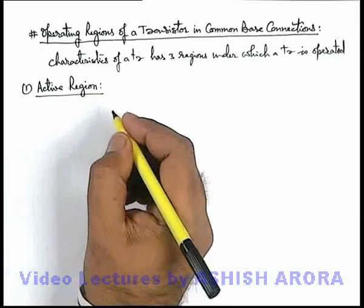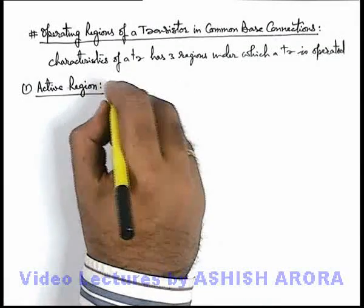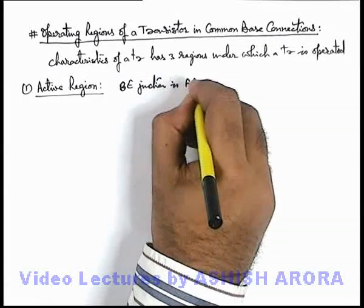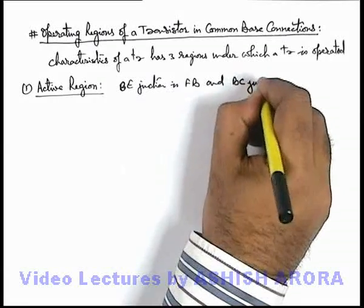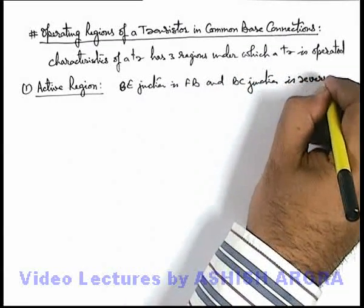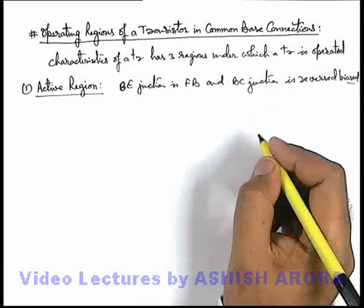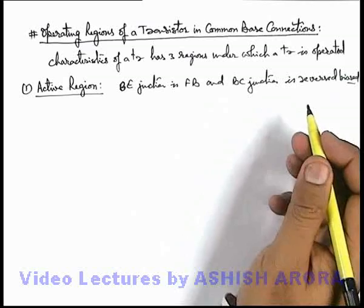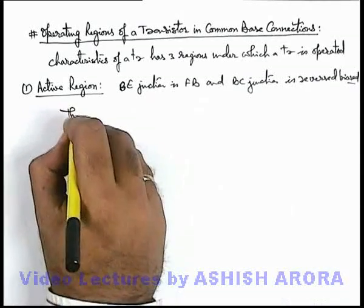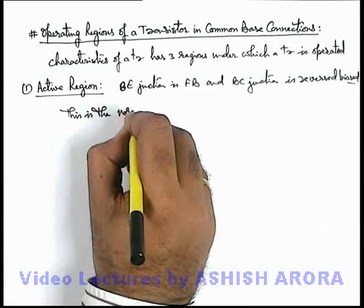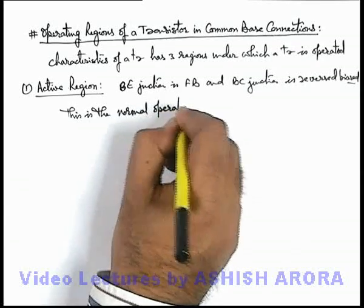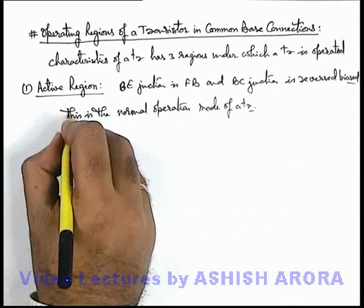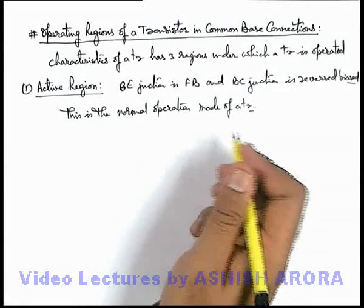The active region is the region in which the transistor is operated in the maximum number of applications. In this region, the base-emitter junction is forward biased and the base-collector junction is reverse biased. In this situation, the collector current is almost independent of the base-collector voltage. This is the normal operation mode of a transistor, and always remember that almost the value of collector current is independent of base-collector voltage.